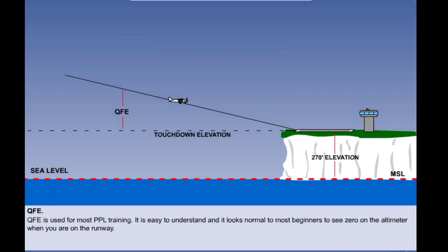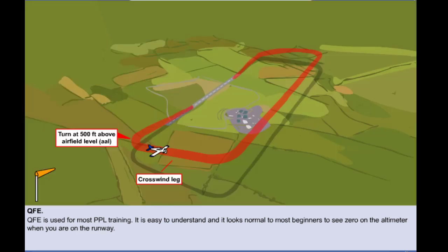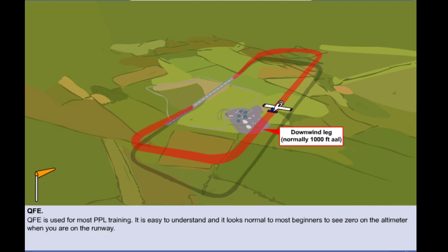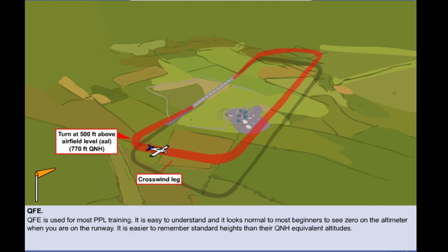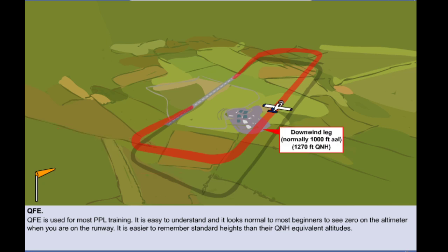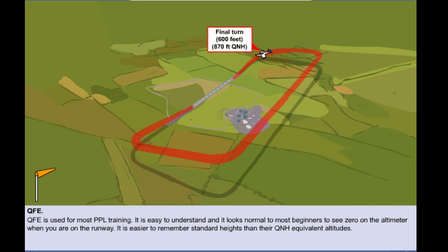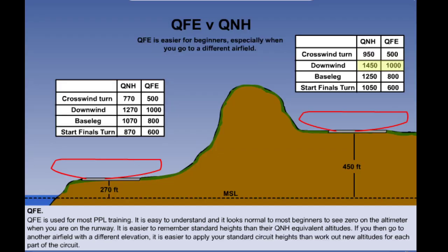QFE is used for most PPL training. It is easy to understand, and it looks normal to most beginners to see zero on the altimeter when on the runway. Circuits vary from airfield to airfield, but typically students are taught to start the crosswind turn at 500 feet, fly the downwind leg at 1,000 feet, lose some height in the turn to begin the base leg at 800 feet, and start the final turn at 600 feet. If the airfield elevation is, say, 270 feet, it is easier to remember these numbers than the QNH equivalent of 770, 1270, 1070, and 870. Furthermore, if you then go to another airfield where the elevation is say 450, it is easier to apply your standard circuit heights than work out new altitudes for each part of the circuit.